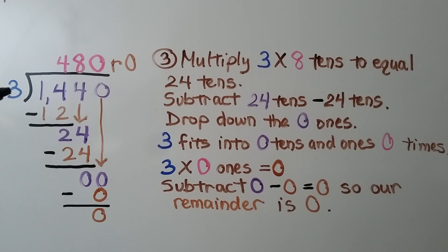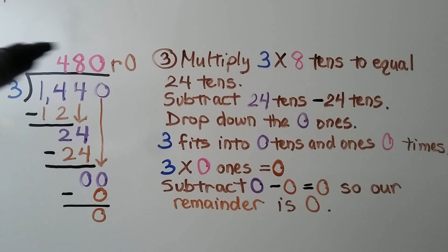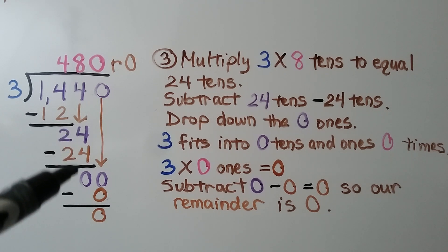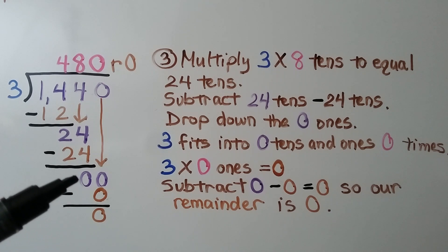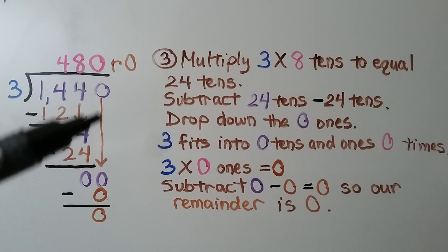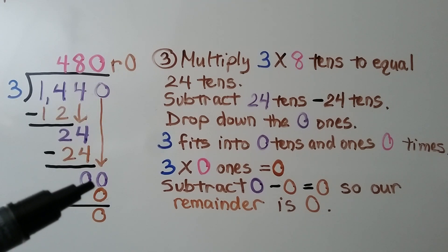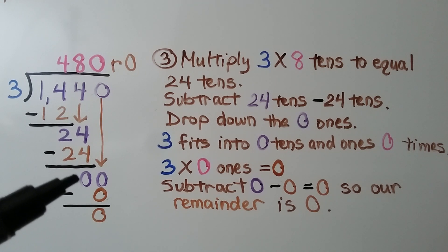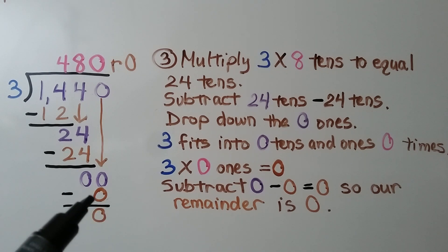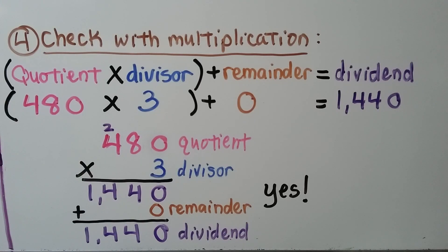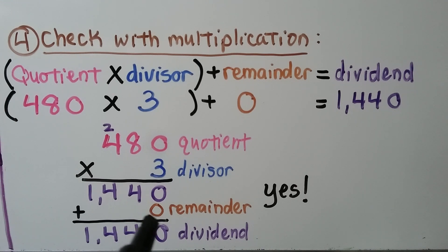We multiply the divisor 3 times the 8, because 3 fits into 24 eight times. 3 times 8 is 24, so we write 24 and subtract — 24 minus 24 is 0. We drop down the 0. 3 fits into 0 zero times, so a 0 goes in the ones place. 3 times 0 is 0; we subtract and get a remainder of 0. Our quotient is 480, remainder 0. We check: quotient times divisor plus remainder equals the dividend, and it does — we did our math correctly.